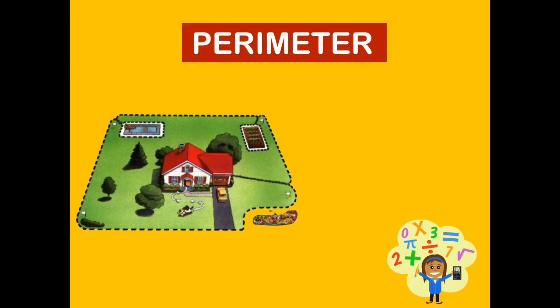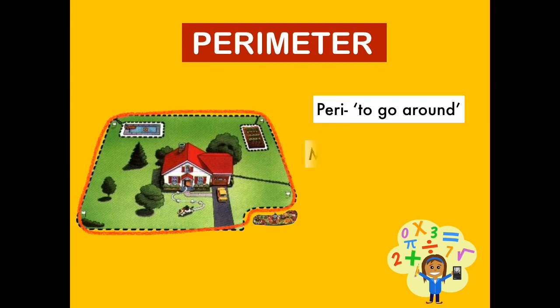What is perimeter? Perimeter simply means to go around, while meter means to measure. Putting it together, we say that perimeter means to find the measurement around.